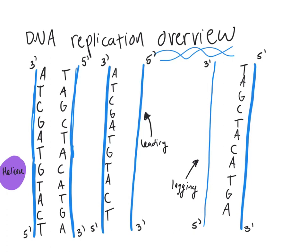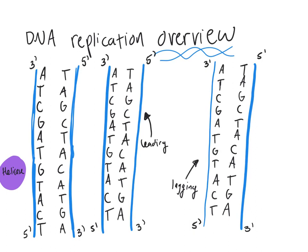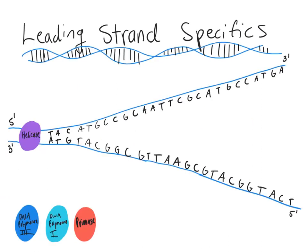Before getting into how the leading and lagging strands are different, it's worth noting that in the end, these strands are going to have the exact same DNA sequence — it's just how we get that sequence that is different. Our final result will be two identical DNA molecules. The whole point of this is to take one chromosome or one DNA molecule and create two DNA molecules.